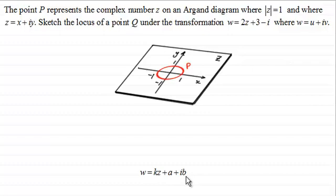And to demonstrate this, I've got this example here where the point P represents the complex number z on an Argand diagram where the modulus of z equals 1 and where z equals x plus iy. And what we've got to do now is sketch the locus of a point Q under the transformation w equals 2z plus 3 minus i, where w equals u plus iv.